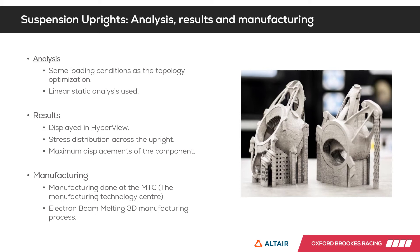The results are displayed in HyperView, where the stress map using the von Mises criterion is shown. The yield strength of the titanium used is 830 MPa, and we must ensure the maximum stress on the entire component does not exceed that value. If it did, a redesign of that specific zone would be required before running another simulation. Displacements are also shown in HyperView. Finally, the manufacturing process is performed by the MTC — the Manufacturing Technology Centre — using a process called electron beam melting, which allows the complex geometry from topology optimization to be achieved, reducing mass while maintaining required stiffness.